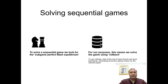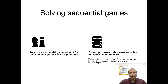Now we try to find a solution for sequential or dynamic games. In the previous video, we also found sub-game perfect Nash equilibrium but that method was a bit difficult. To repeat: in that method, we first identify all the Nash equilibria in the dynamic game, then find the Nash equilibrium which is also a Nash equilibrium in each sub-game, and remove non-credible threats.